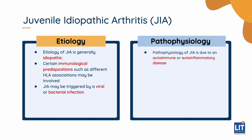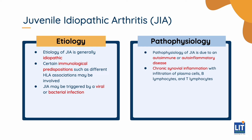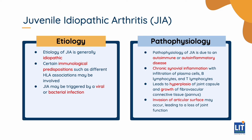The pathophysiology of JIA is due to an autoimmune or autoinflammatory disease. There is chronic synovial inflammation with infiltration of plasma cells, B lymphocytes, and T lymphocytes. This leads to hyperplasia of the joint capsule and consequently a growth of fibrovascular connective tissue, also known as pannus. There may be invasion of the articular surface which then leads to a loss of joint function.